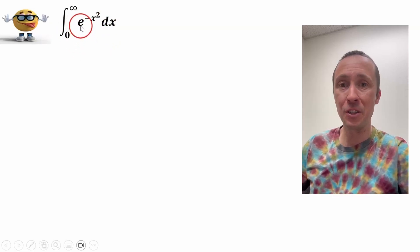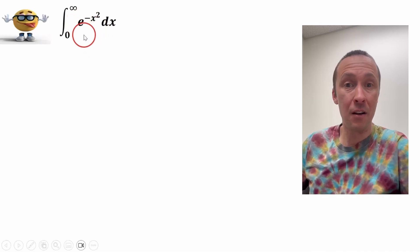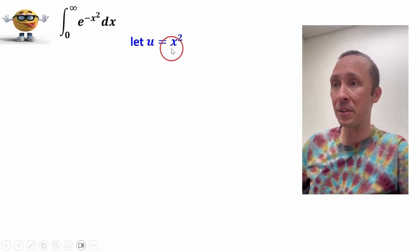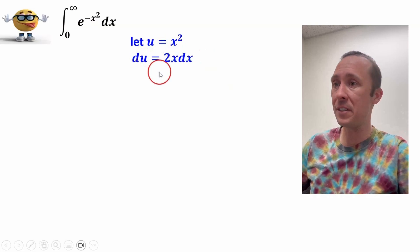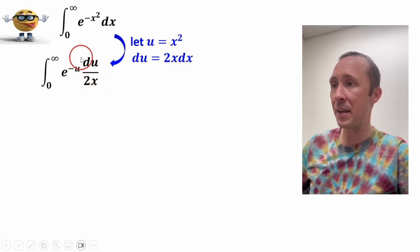So first thing we're going to do is get this into the form of looking like the gamma function. We'll let u equal x squared, then take the derivative du equals 2x dx. And if we substitute that in, this is what we have.